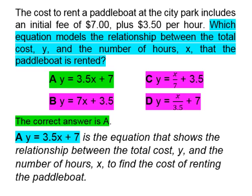The correct answer is A: Y, which represents the total cost, is equal to 3.5X — that means $3.50 per hour — plus $7, which is the initial fee.